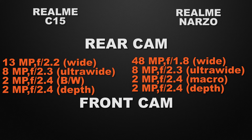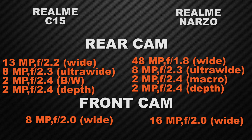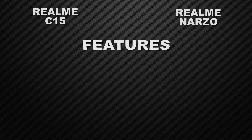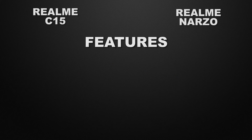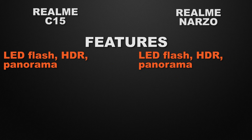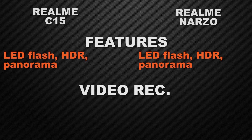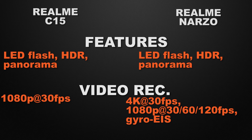For front cameras, the C15 has an 8MP wide camera and Narzo has a 16MP wide camera, so the winner is Narzo. Both devices have LED flash, HDR, and panorama, so it's a tie on camera features. For video recording, the C15 can shoot 1080p, but the Narzo can shoot 4K and 1080p with electronic image stabilization. The winner is Realme Narzo because of the 4K recording option.